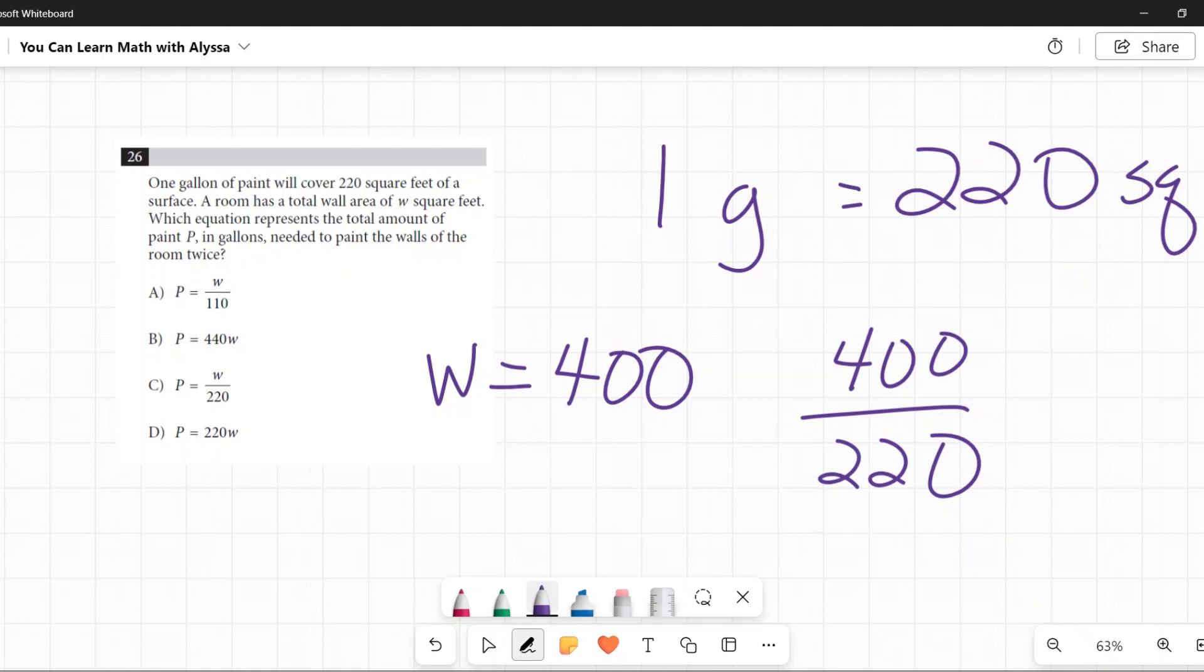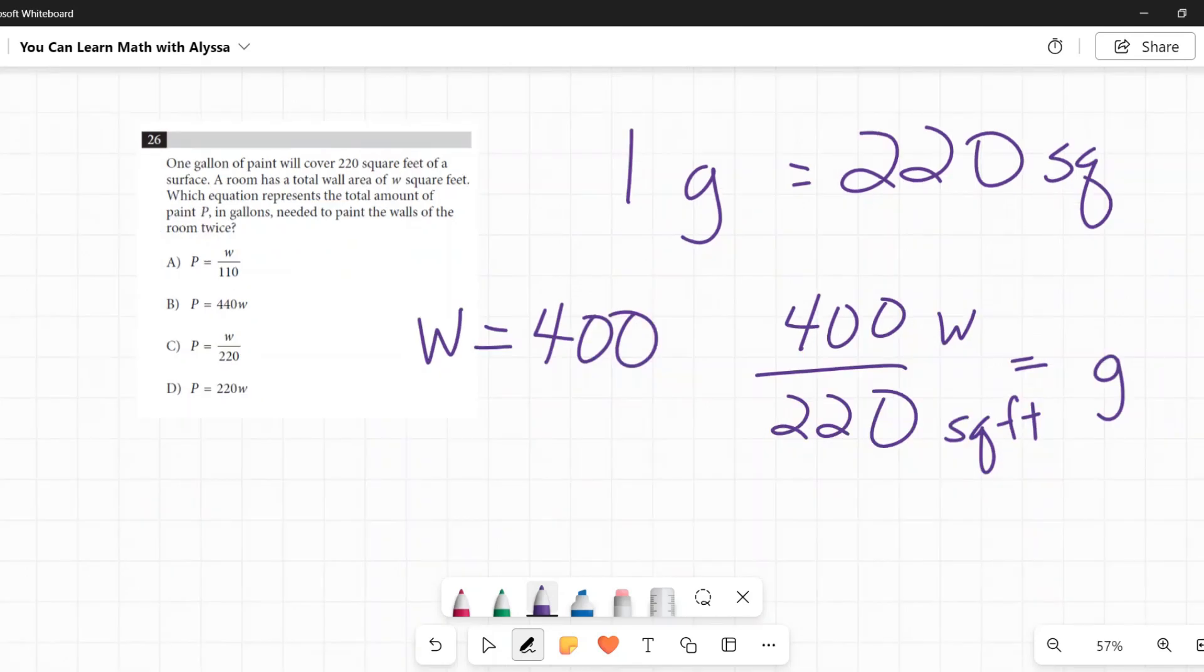So there my W is on top, my square feet are on the bottom. I would divide that to figure out how many gallons I need. So we've got our relationship.